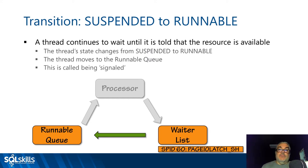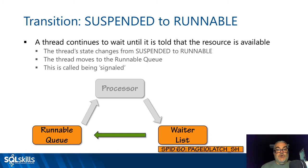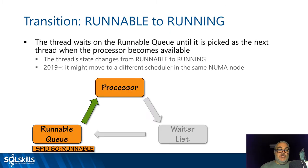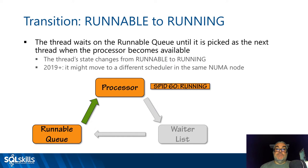For example, a lock released by a thread on a completely different scheduler signals our thread, placing it on the runnable queue. For an IO wait, another thread on our scheduler periodically checks whether pending IOs have completed and signals the waiting thread. The runnable queue acts roughly as first-in first-out. In SQL Server 2019 and onwards, a thread may also move to a different scheduler in the same NUMA node to help with load balancing.